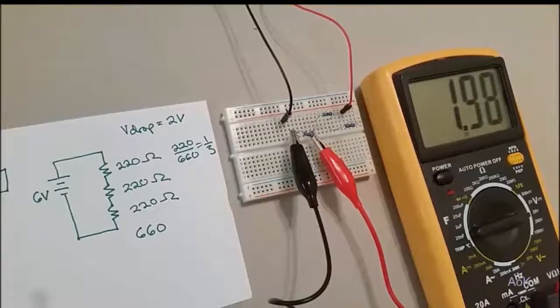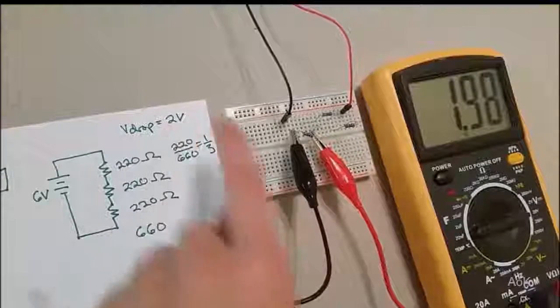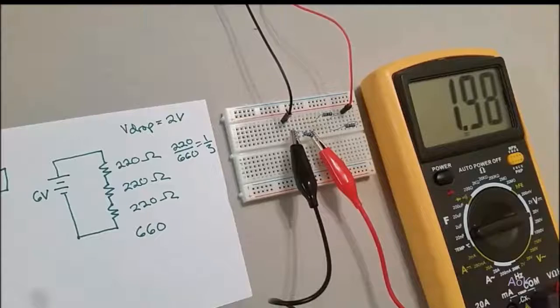We calculated a voltage drop of 2 volts across this 220 ohm resistor, and the multimeter confirms that that is the voltage drop.